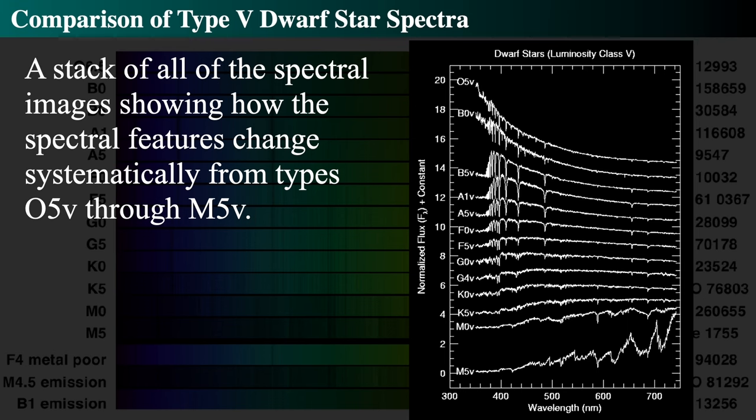Stellar spectra are an incredibly important element of all this. As we look at the types of stars in the sky, we can classify them into groups ranging from the hot O stars to the cool M stars. We understand the nature of their atmospheres, the nature of their temperatures, and we get to begin the physics of stars. That's what we'll pick up next time. See you soon.